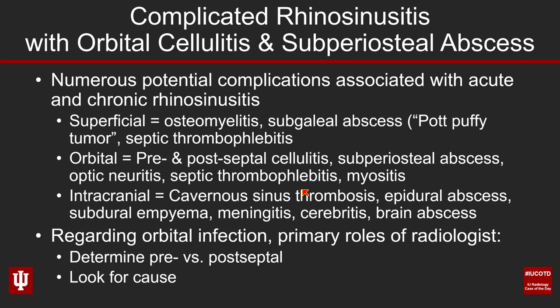Additionally, look for a cause for the orbital cellulitis or orbital infection. One of the most common causes we see is sinus disease, so a very common complication you'll encounter as a radiologist will be orbital cellulitis from rhinosinusitis. And then lastly, look for complications — they can be devastating, with infection tracking intracranially causing cerebritis, abscess, meningitis, and more. Your job as a radiologist is to identify those potentially life-threatening complications and help direct the patient to appropriate care.